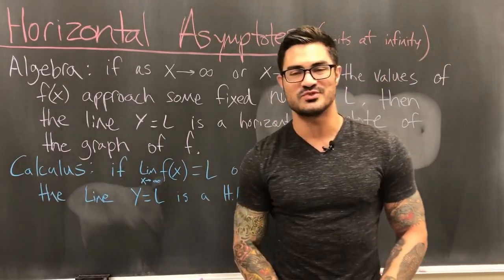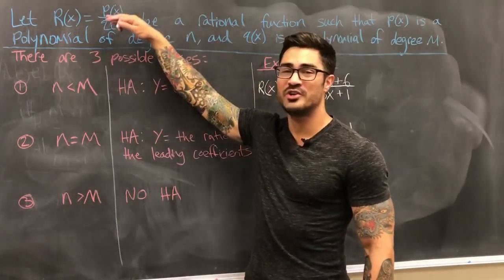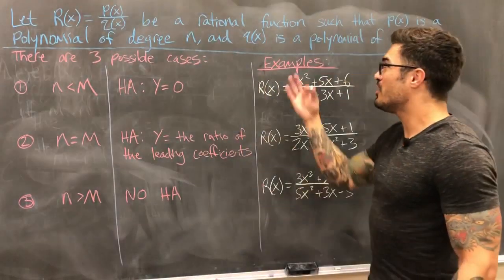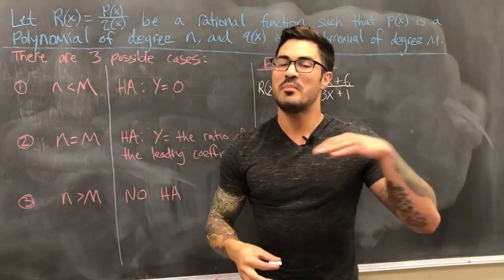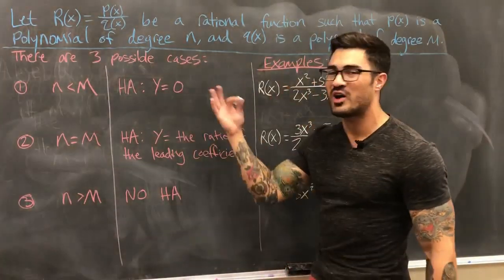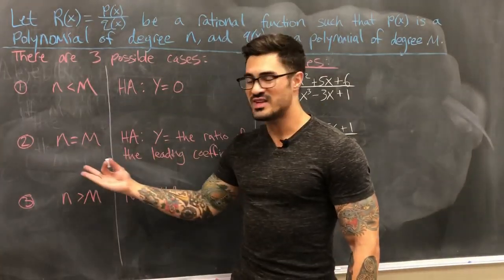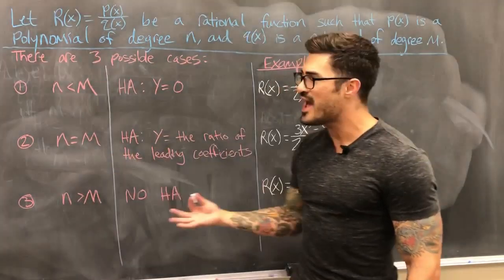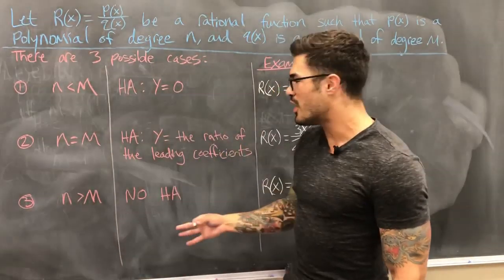Let's call r(x) a rational function — a polynomial over a polynomial. The degree of the numerator is n and the degree of the denominator is m; degree just means the highest power, that leading term. There are three possible cases: the degree of the numerator is less than the degree of the denominator, the degrees are the same, or the degree of the numerator is greater than the degree of the denominator.